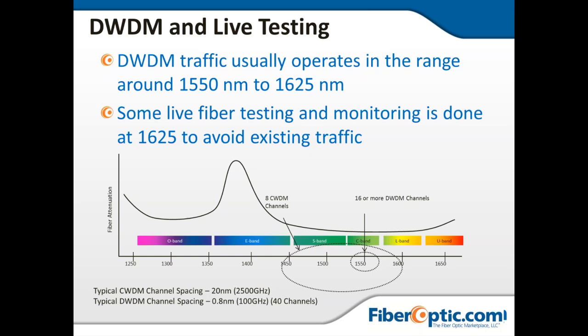For fiber-to-the-home wavelengths: the 1310 nanometer is used for the return path, 1490 is for voice and data downstream, and 1550 is for downstream video. Those highlight the comments made earlier about why we need those particular wavelengths for fiber-to-the-home and how each one is used.